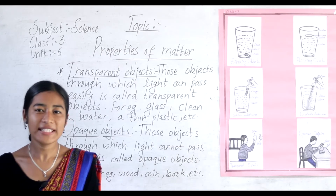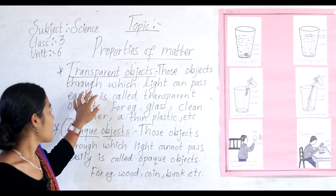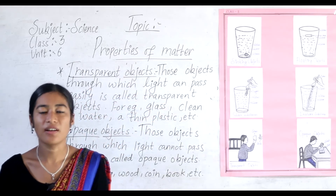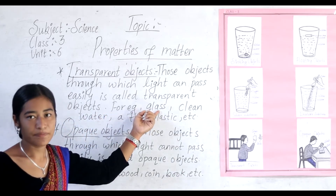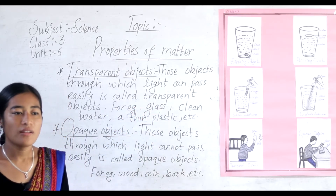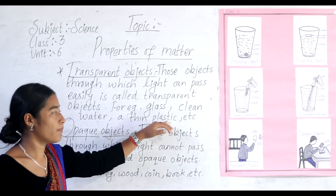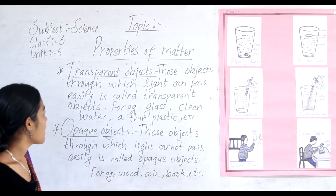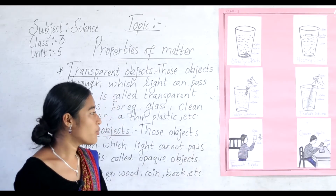Now we will go through the next topic: transparent objects. Transparent objects are those objects through which light can pass easily. For example, glass — glass is a transparent object because light can easily pass through it. Clean water and thin plastic are also examples of transparent objects.